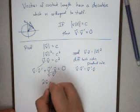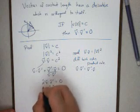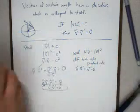Then those add together to give me two v dot v prime, which means v dot v prime after I divide by two is zero. And that completes the proof.